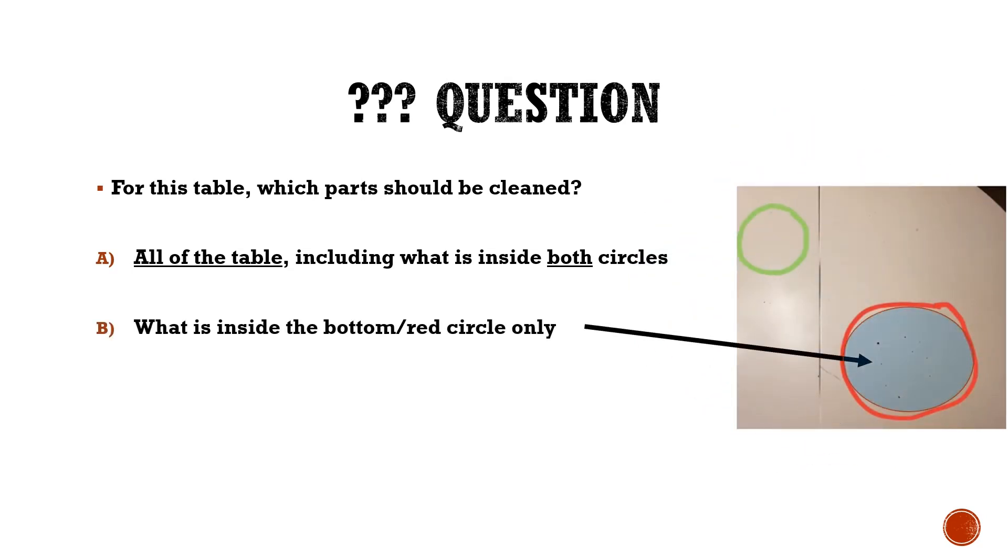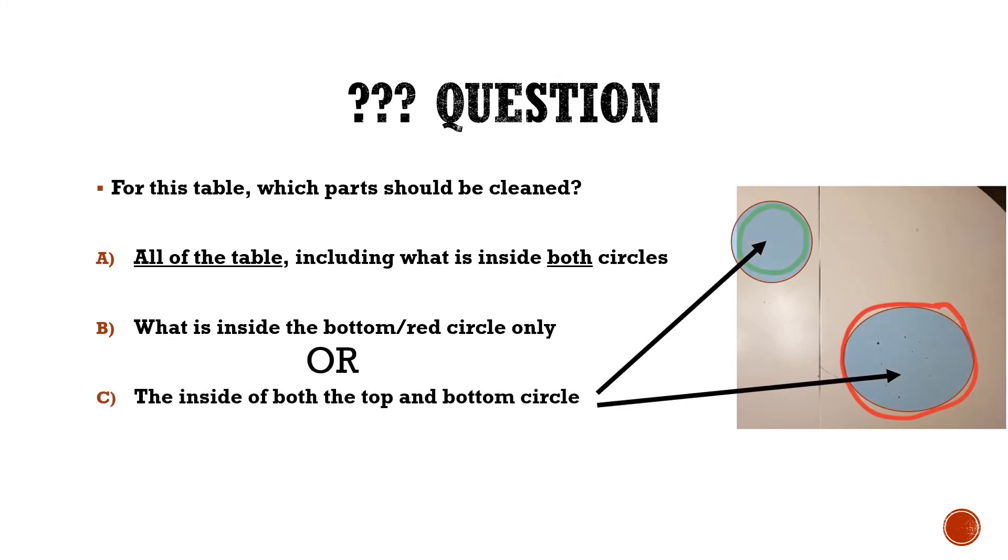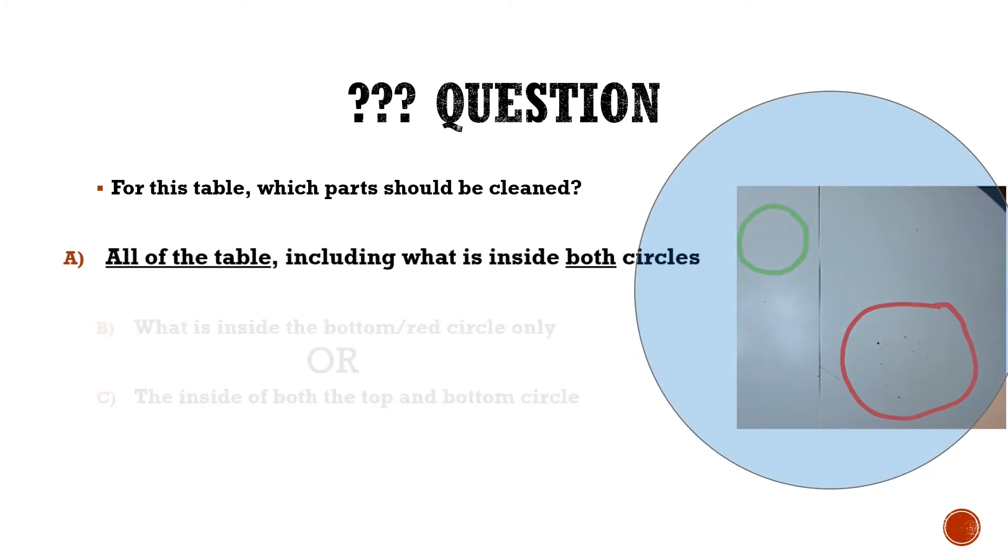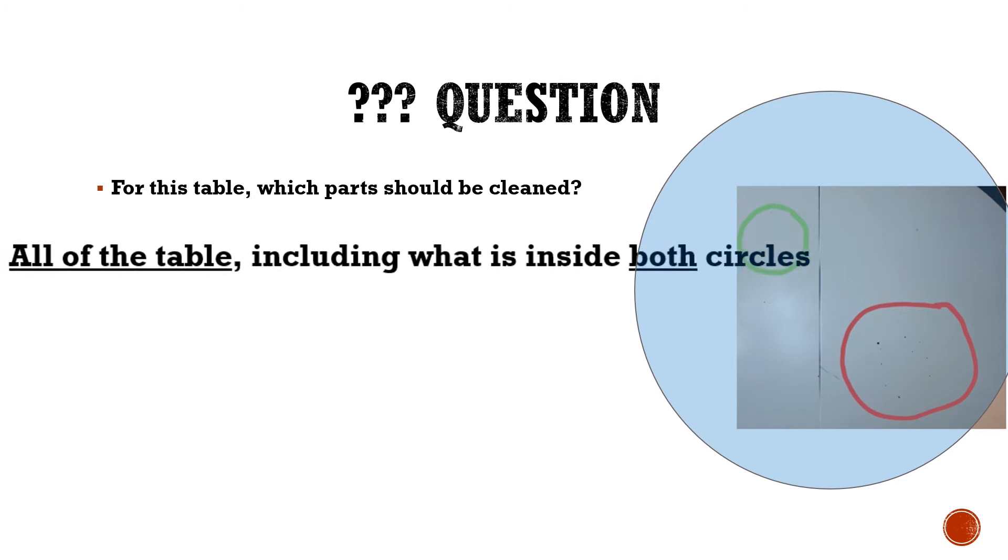B, what is inside the bottom red circle only? Or C, the inside of both the top and bottom circle? All of the table, including what is inside both circles.